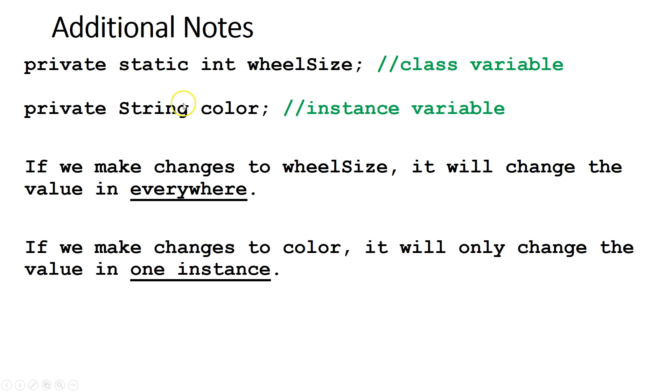Some additional notes. The private static int wheel size is a class variable. Private String color is an instance variable. And we know that because static means it's a class variable. No mention of static means it's an instance variable. If we make a change to wheel size, since it is a class variable, it will change the value everywhere.